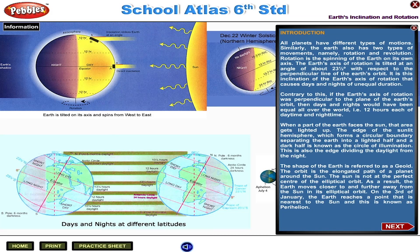The shape of the Earth is referred to as a geoid. The orbit is the elongated path of the planet around the Sun. As a result, the Earth moves closer to and further away from the Sun in its elliptical orbit.